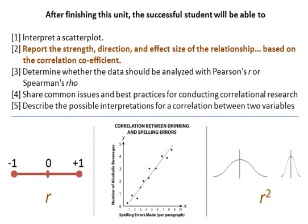Our second learning objective is to report the strength, direction, and effect size of the relationship based upon the correlation coefficient. The most commonly used correlation coefficient is Pearson's R, which ranges in value from negative one to positive one. A correlation coefficient of zero means no relationship between the two variables at all — for example, shoe size and high school GPA. A positive correlation means there is a positive relationship between the two variables, such as how much you exercise and your health. A negative correlation means there is a negative relationship between the two variables, such as how much money you spend and how much you save.